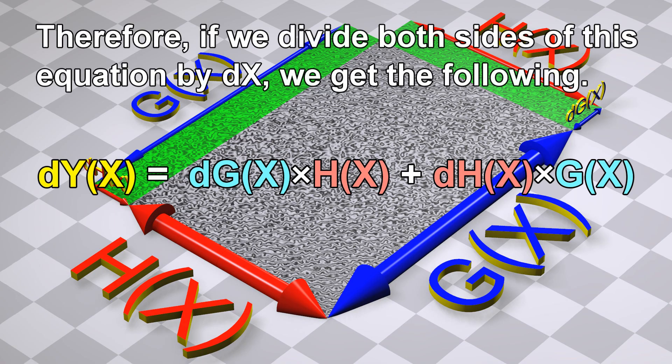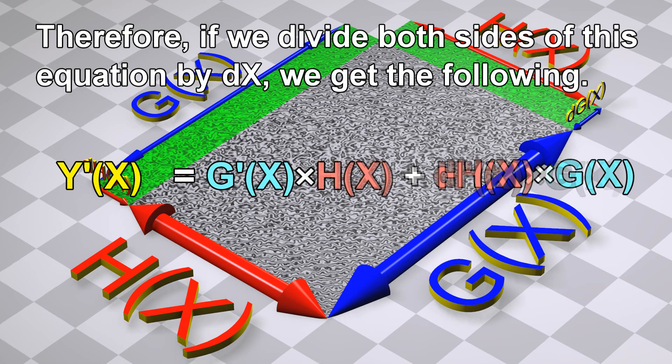Therefore, if we divide both sides of this equation by dx, we get the following: y prime is equal to g prime multiplied by h, plus h prime multiplied by g.